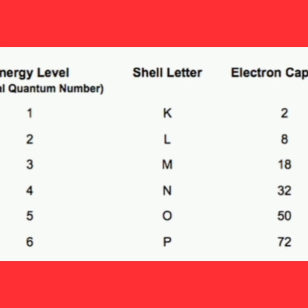The second shell is called the L shell and can contain a maximum of eight electrons. The third shell is the M shell and can contain a maximum of 18 electrons. The fourth shell is called the N shell and can contain a maximum of 32 electrons. To summarize: K shell = 2 electrons, L shell = 8 electrons, M shell = 18 electrons, N shell = 32 electrons.